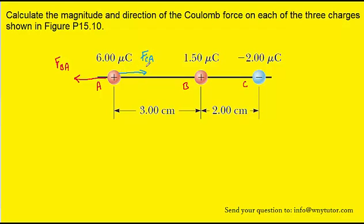Notice that FCA is pointing to the right, and that's going to make it positive, whereas FBA is pointing to the left and will therefore be negative. So the net force acting on charge A is going to be the positive FCA minus FBA.